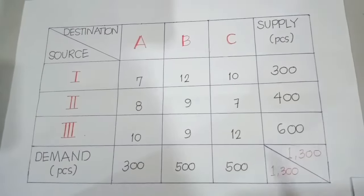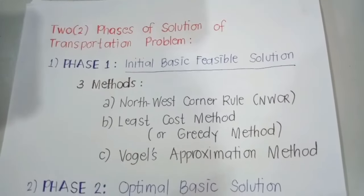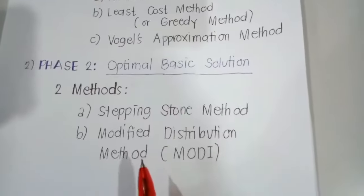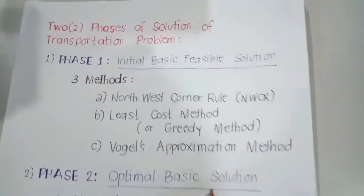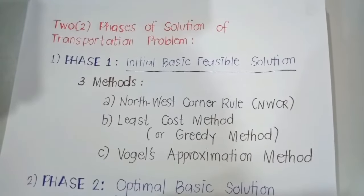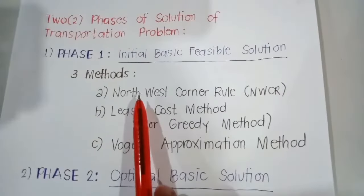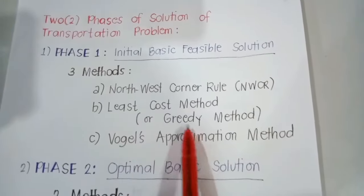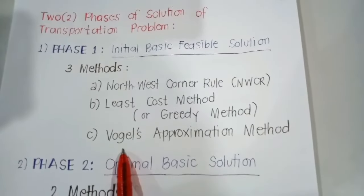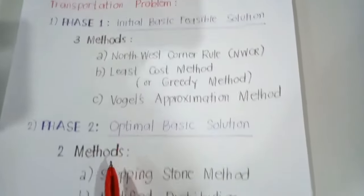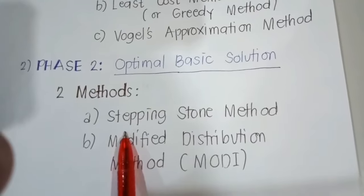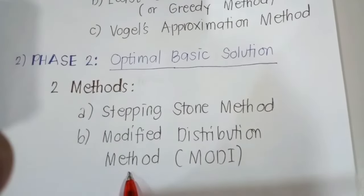Therefore, this example is a balanced transportation problem. There are two phases in solving a transportation problem. Phase one is the initial basic feasible solution, and phase two is the optimal basic solution. For phase one, there are three methods: the Northwest Corner Rule Method (NWCR), the Least Cost Method (also known as the Greedy Method), and Vogel's Approximation Method (VAM). For phase two, there are two methods: the Stepping Stone Method and the Modified Distribution Method (MODI).